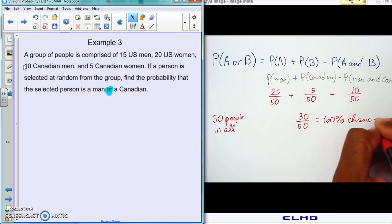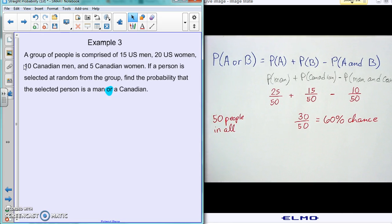That's a 60 percent chance that this is going to happen - that's the probability that the selected person is a man or a Canadian. And that's it, you just have to know what formula to use and use it correctly. And again, they don't give it to you on the test, they don't give you your formulas.